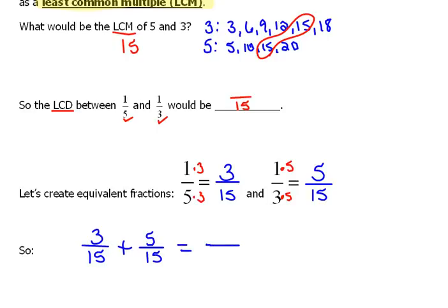And now, because the denominator is the same, we just add them as we've learned to already. The denominator will stay 15, and we will add the numerators. 3 plus 5 would be 8. So, when adding 1/5 plus 1/3, the answer would be 8/15.